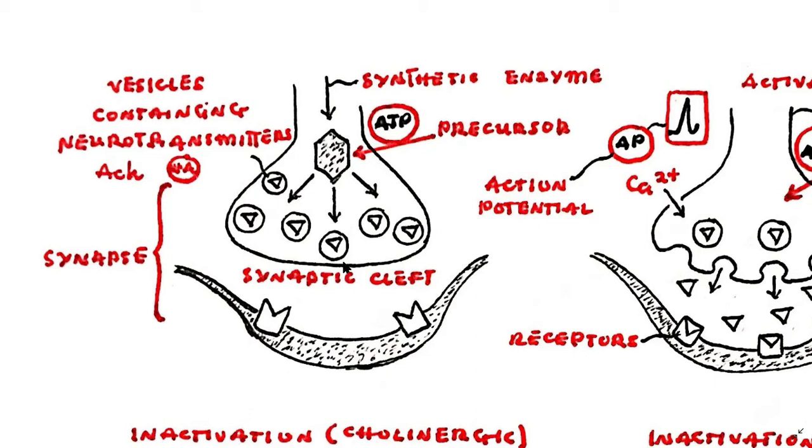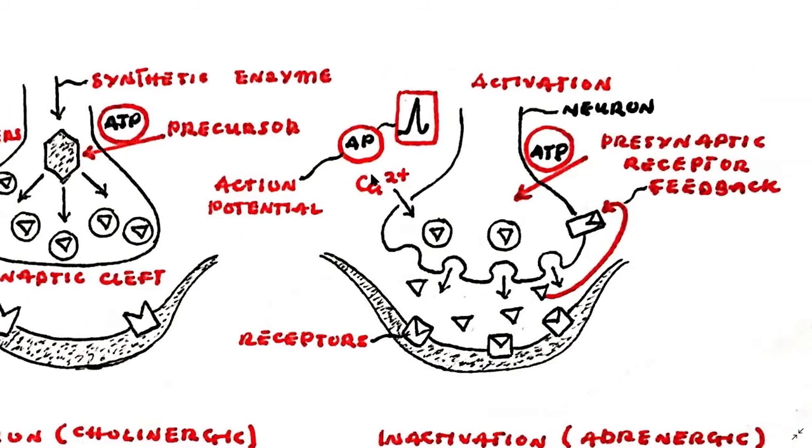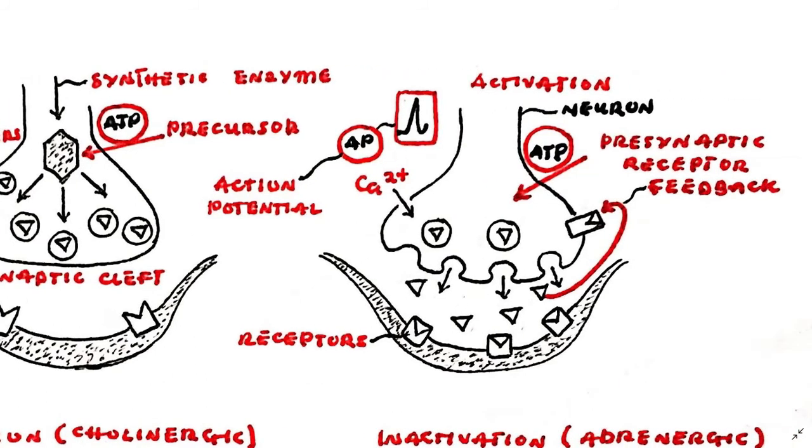Postganglionic neurons branch repeatedly and have numerous boutons along their length forming varicosities. Synthetic enzymes are transported down the axon into the bouton where they synthesize neurotransmitters such as acetylcholine and noradrenaline from precursors transported into the bouton. The neurotransmitter is stored in vesicles and the arrival of action potential at the nerve ending causes an influx of calcium.